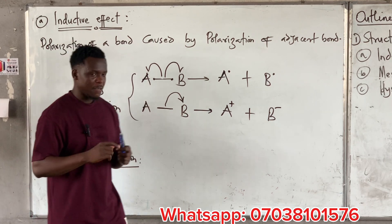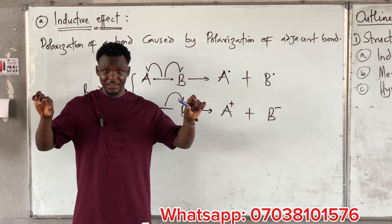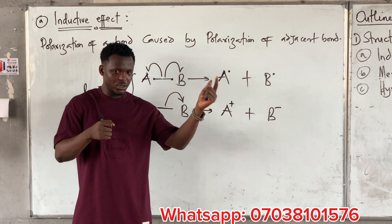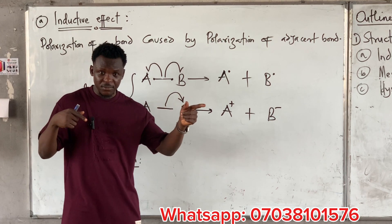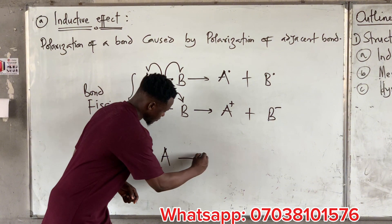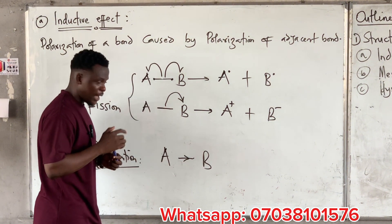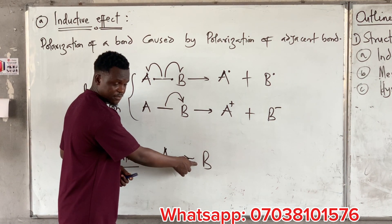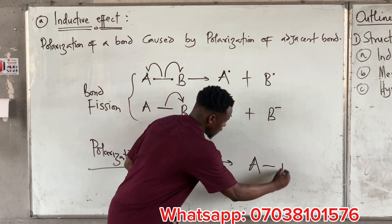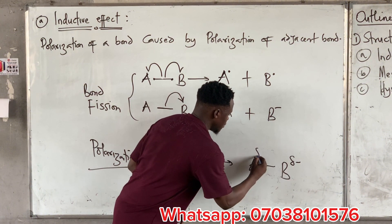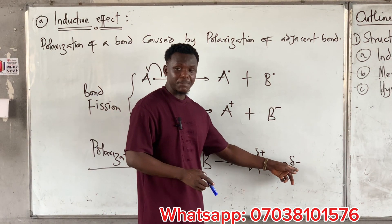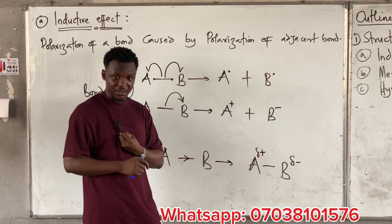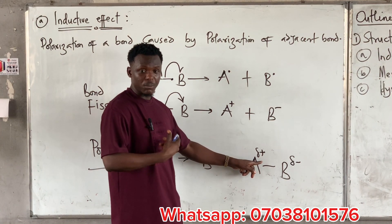Imagine two persons holding the ends of a rope, and one side has more energy than the other. It's going to pull the other person, but the rope won't cut. So if I have A—B and B has more electronegativity to attract electrons towards itself, you will see A with partial plus and B with partial minus. Any time you see partial minus or partial plus, it simply means the bond has been polarized.